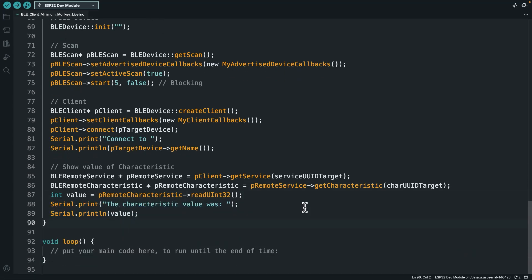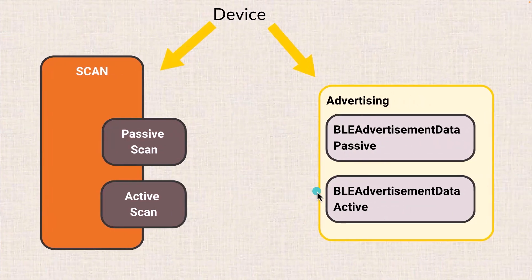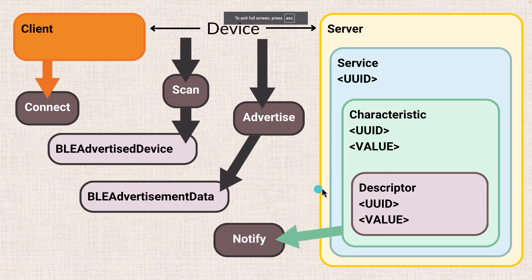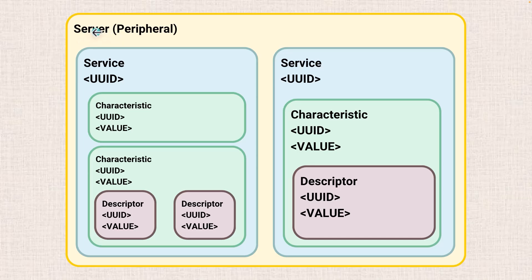What we want to do is show the value of a characteristic. If we go back to our chart here — we've got a server running on a separate ESP32, that server is running a service. A server can have multiple services, and each service can have multiple characteristics. So when we try to get a characteristic from a server, we need to first identify which service we're talking about.